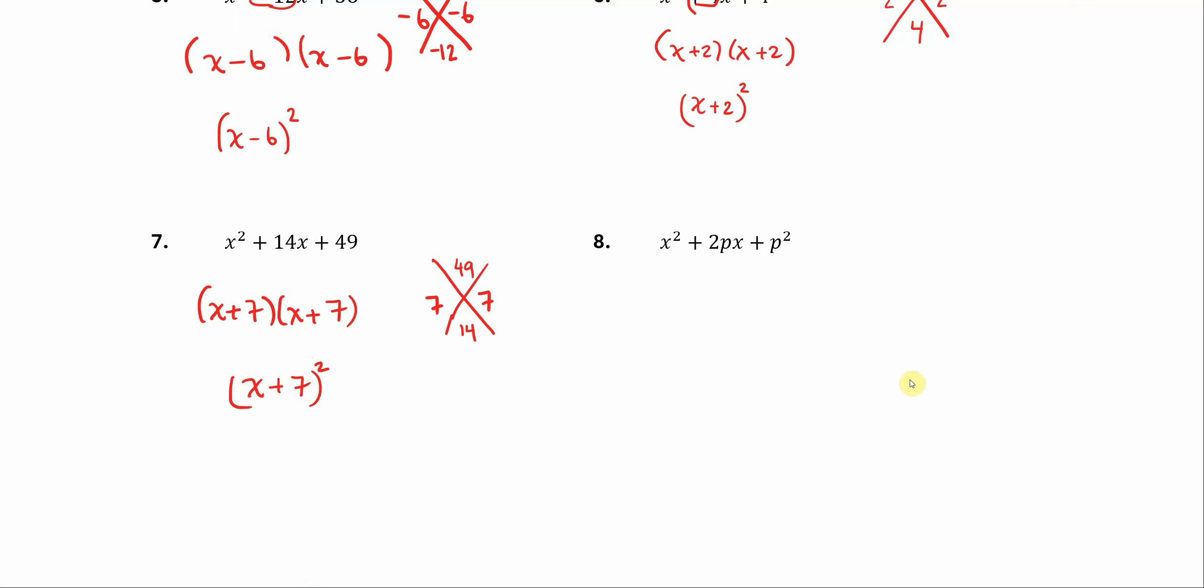And now one more, except this time we don't have an exact number. We have some letters here. But we're looking for two values that would multiply to p squared but add to 2p. So we look at the x's as variables. We treat the p here as like a constant whose value we don't really know.